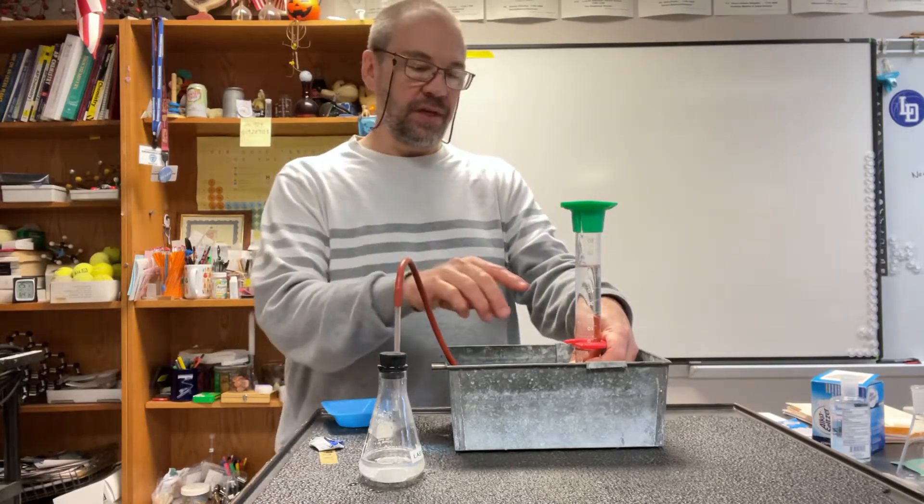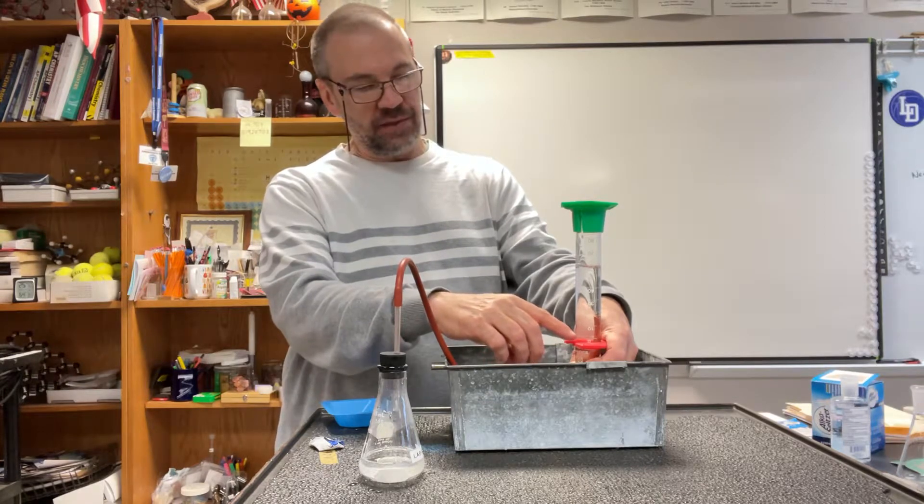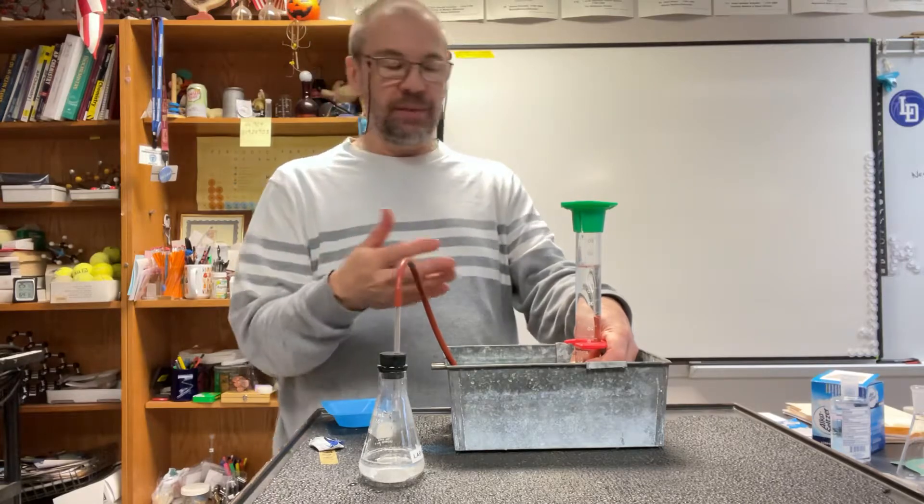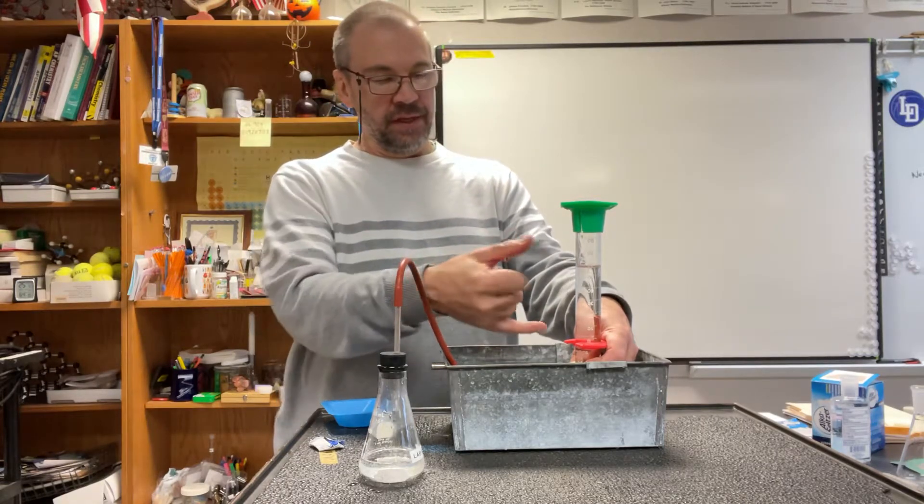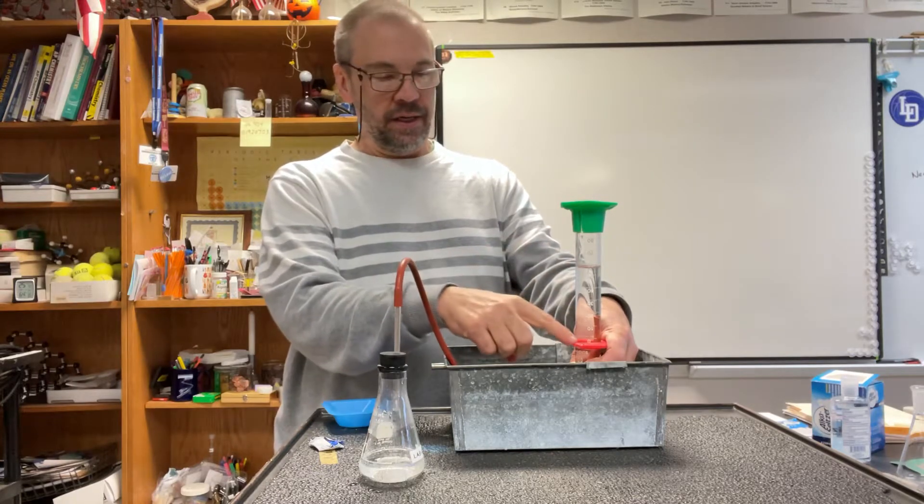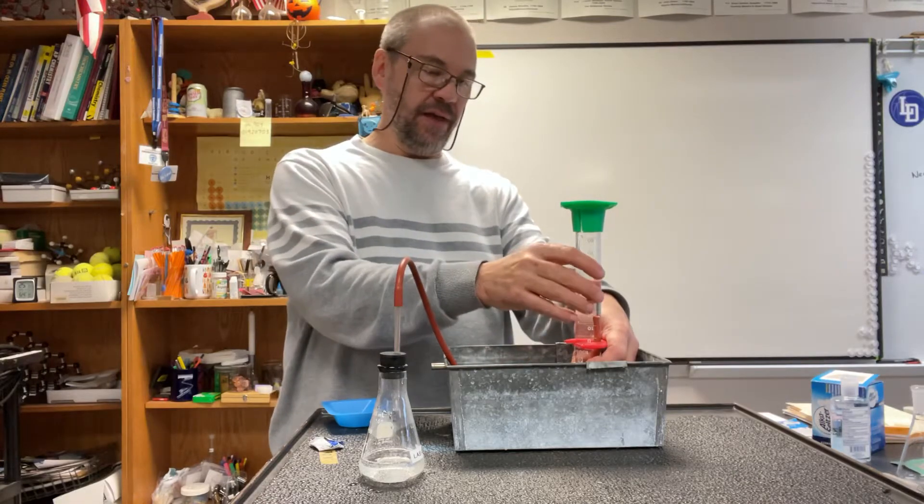What you want to do is use enough Alka-Seltzer to bring that level down as far as possible, but not going past the 100 mark, otherwise you won't be able to measure it. Then we're going to measure the difference between where we started and where we ended up, and that's going to be the volume of carbon dioxide collected.